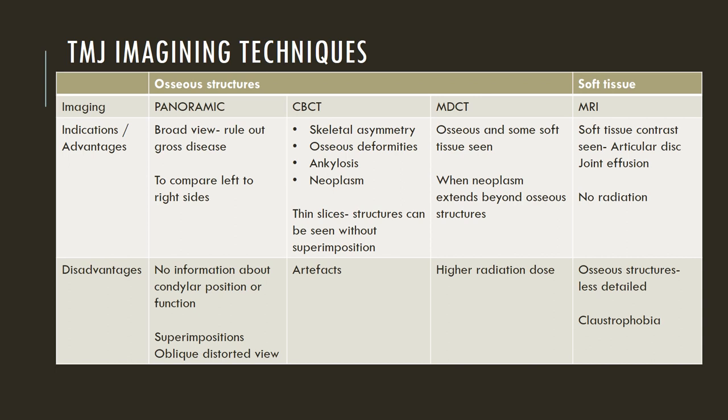When it comes to a CBCT scan, it is an excellent modality to view skeletal asymmetry, osseous deformities, and ankylosis or neoplasm. The slices are thin, and hence structures can be seen without any superimposition. The disadvantage is that metal objects can sometimes cause artifacts which can obscure the TMJ area.